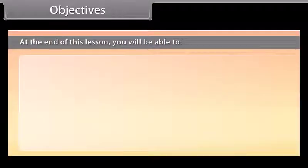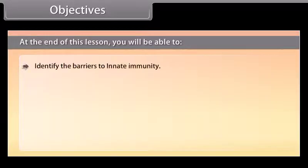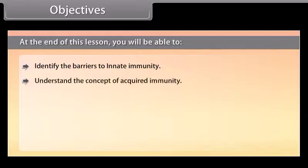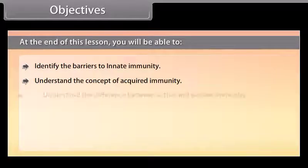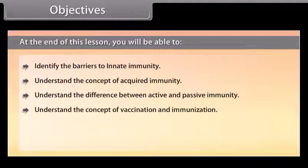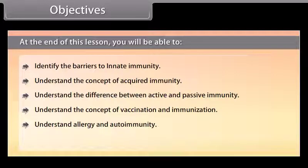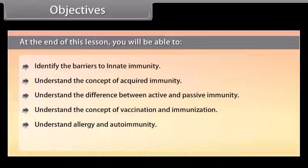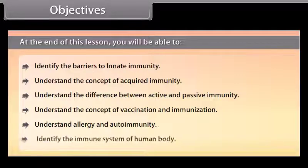At the end of this lesson, you'll be able to: identify the barriers to innate immunity; understand the concept of acquired immunity; understand the difference between active and passive immunity; understand the concept of vaccination and immunization; understand allergy and autoimmunity; and identify the immune system of the human body.